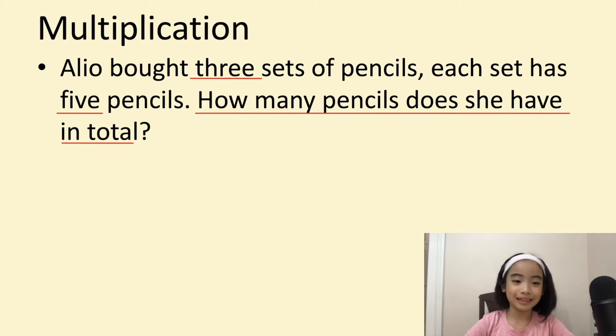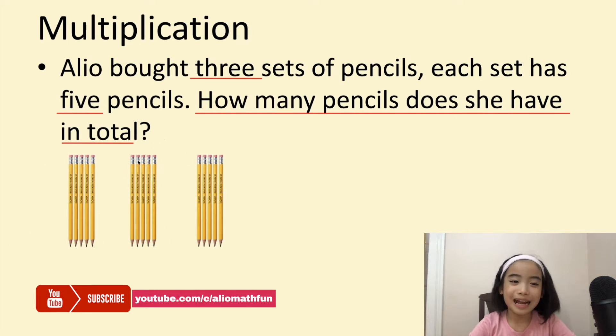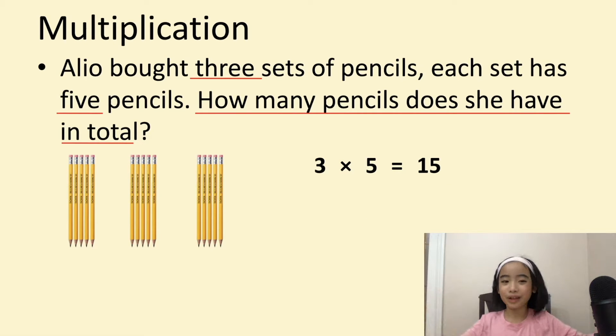Now, let's solve this question. We know that Aliyo bought three sets of pencils, and each set has five pencils. So here is one, two, three, four, five. If a question asks you to put equal groups of things together, it is a multiplication problem. Now, let's multiply. Three times five equals 15. So, Aliyo has 15 pencils in total.